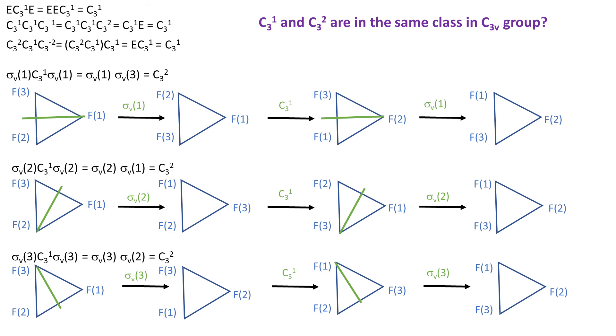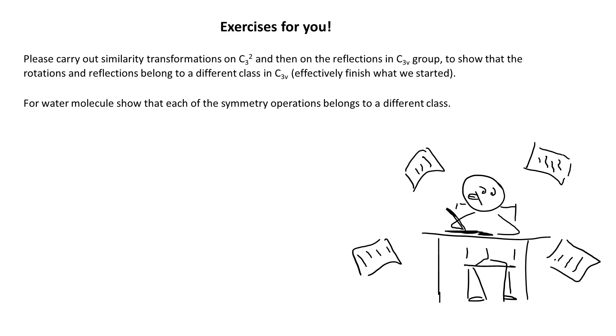So you can see that the similarity transformation gives only C3-1 and C3-2, and no other symmetry elements. That's why C3-1 is in the same class as C3-2. And that can be confirmed by doing the same thing for C3-2. So if you want to, you can do the same for C3-2 and the reflections.